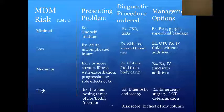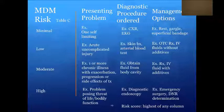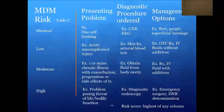When it comes to medical decision making risk, this score is based on the highest you achieve for any one of the three columns — presenting problem, diagnostic procedures ordered, or management options. It is not averaged; any single column at a given level determines the risk level. That's important to know for this methodology.